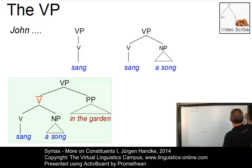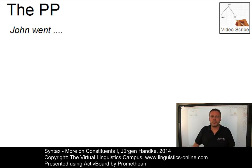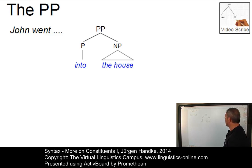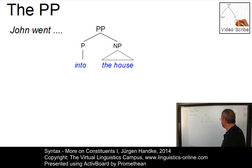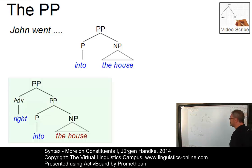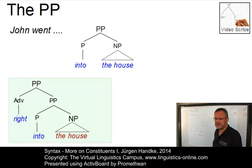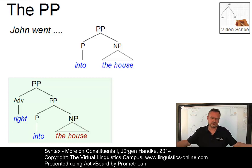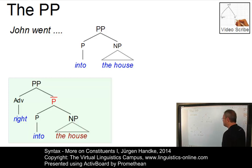Finally, let's take the prepositional phrase as in 'John went into the house.' Prepositional phrases normally consist of the prepositional head — 'into' in this case — and a noun phrase as a modifier, represented here by means of a triangle, meaning we are not interested in the internal structure of the noun phrase at this point. If we now add an initial adverb such as 'right into the house,' we have to expand the structure. Now we have two categories prepositional phrase again, where the intermediate one should be renamed to P-bar.